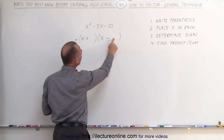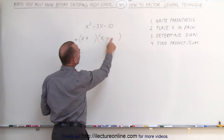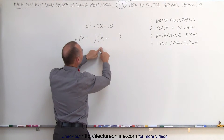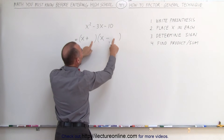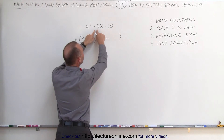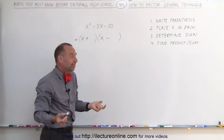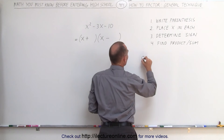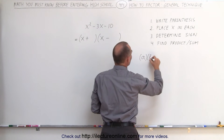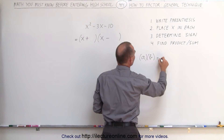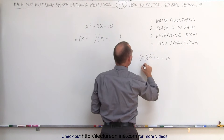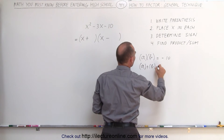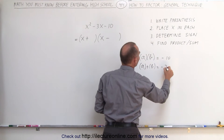Next, we need to find the numbers that fit in here such that when you multiply them together you get negative 10, and when you add them together you get negative 3. Let's say the two numbers are a and b. So a and b: if you multiply them together you get negative 10, and if you add them together you get negative 3.